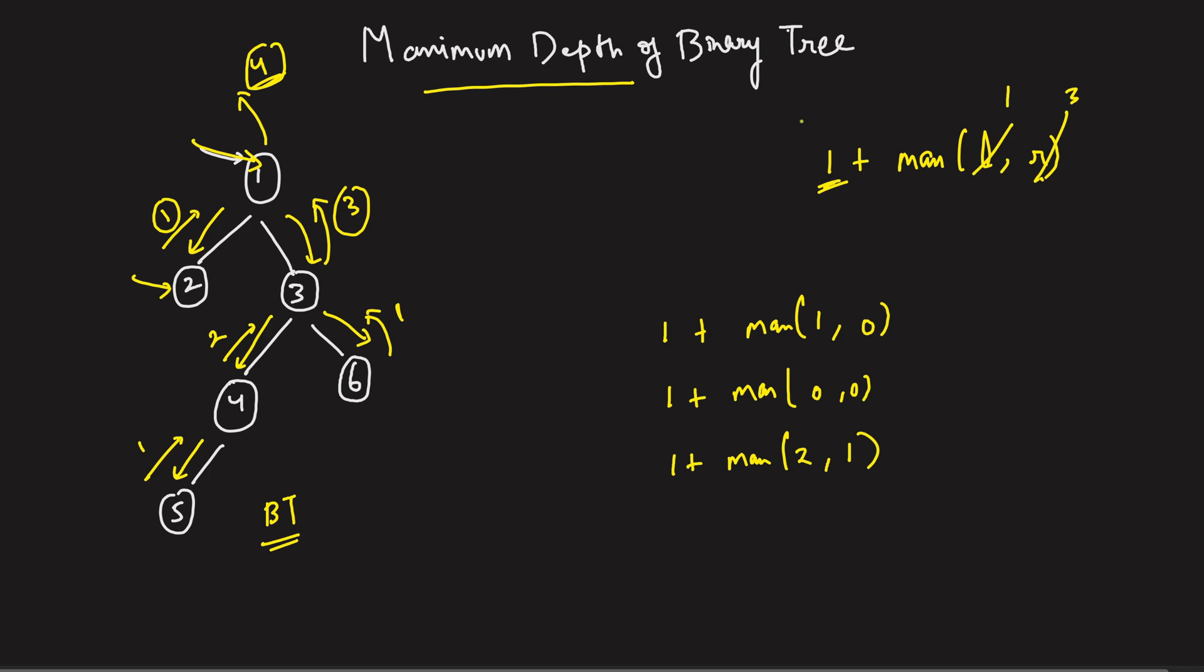So ultimately, using this simple recurrence of 1 plus max of left comma right, I was able to figure out the maximum depth of any given binary tree. And that's how you do it.